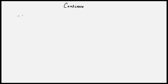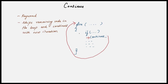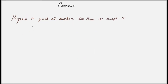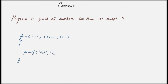Like break, continue is a keyword. If you give continue inside a loop and the execution reaches it, the remaining code in the loop is skipped and it continues with the next iteration. It almost always goes inside an if condition, because placing it outside doesn't make sense — the code after it would never execute. Let's write a program to print all numbers less than 100 except 15, using continue. Write a for loop starting from i equal to 1, i less than or equal to 100, i++. Inside, if i equals 15, give continue.